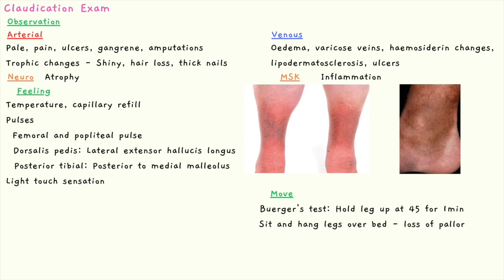After you feel, you want to move the leg. You can do a Buerger's test, where you hold the leg up at 45 degrees for one minute and look for pallor in the big toe. You then sit the patient over and hang their legs over the bed — the pallor will disappear. If the toe becomes pale at less than 45 degrees, that angle is known as Buerger's Angle.